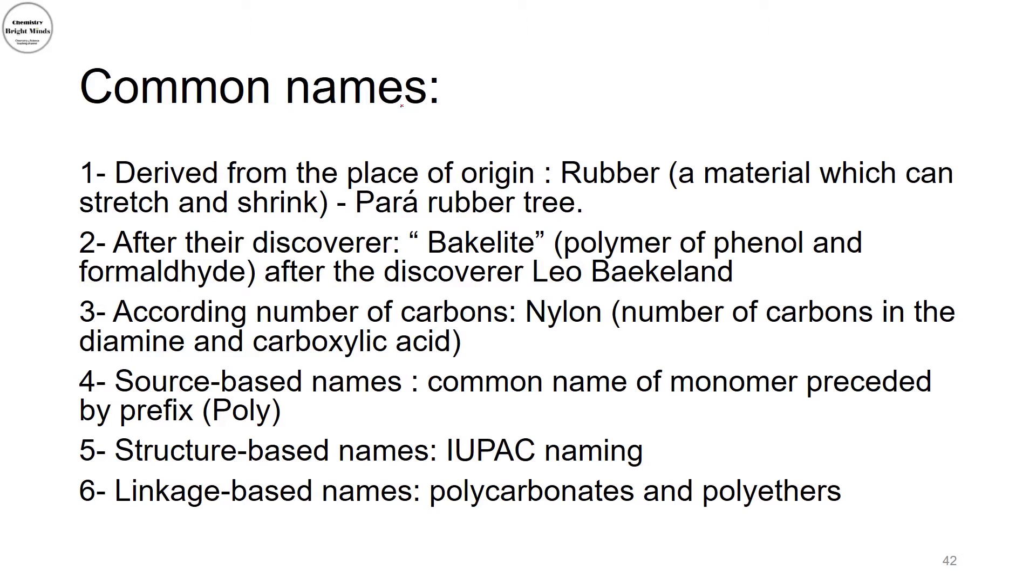The third method of naming polymers is according to the number of carbons, such as nylon. Usually nylon is named according to the number of carbons in both diamine and carboxylic acid. So if I said nylon 6-6, this means I have six carbon atoms in my diamine part and six carbon atoms in my carboxylic acid.